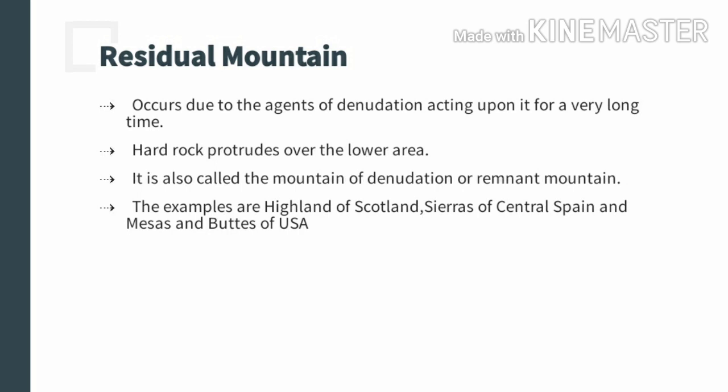When an existing mountain — whether fold or block — is acted upon by agents of denudation such as running water, wind, or ice, the surface area of the mountain is lowered. The harder and more resistant rocks get protruded out, and the highland formed in this way is known as the residual mountain. It can also be called a denudation mountain or a remnant mountain.